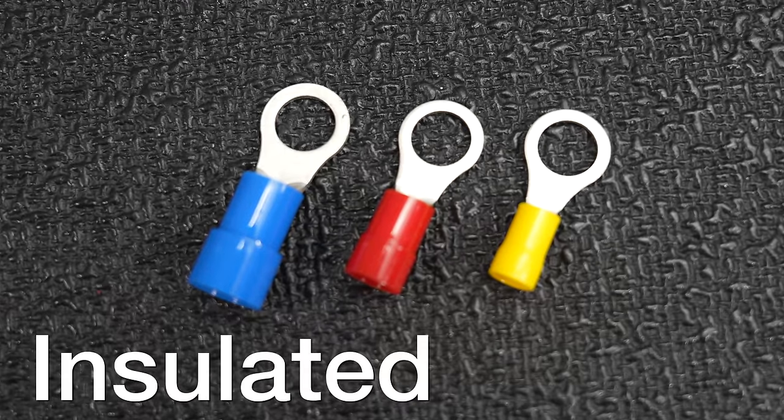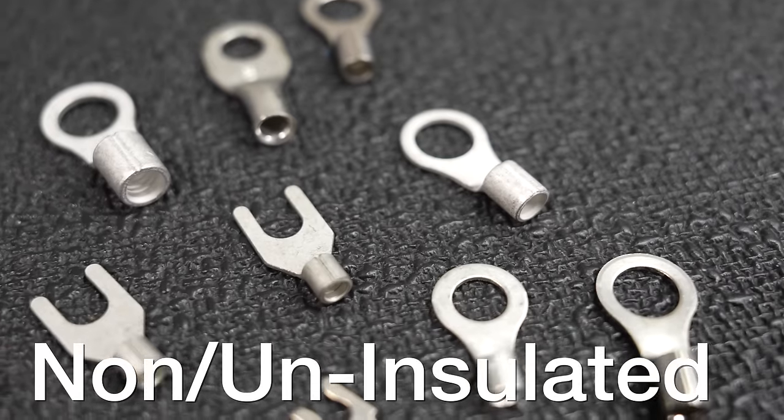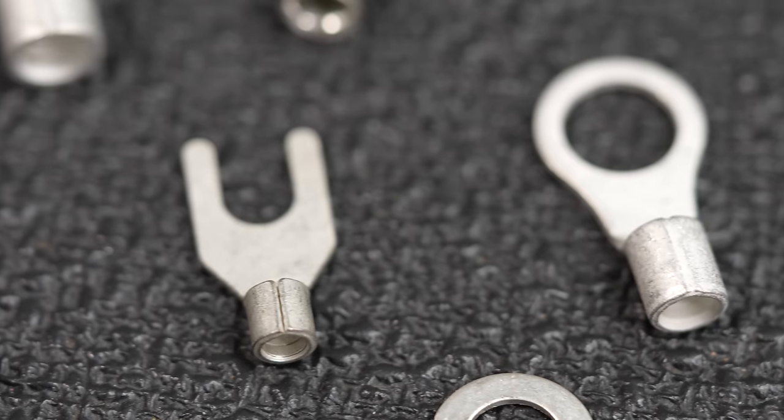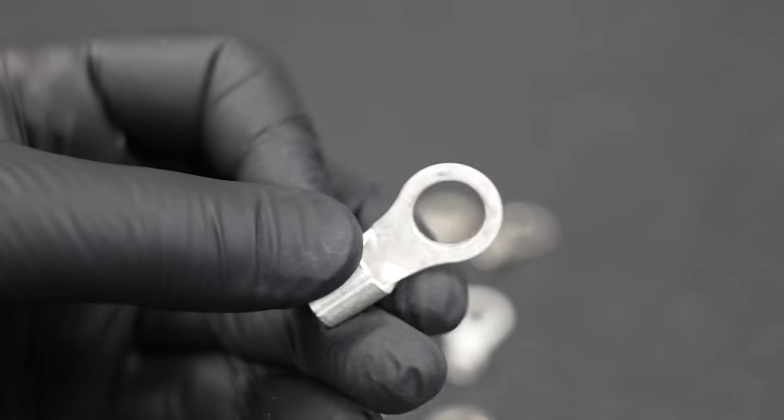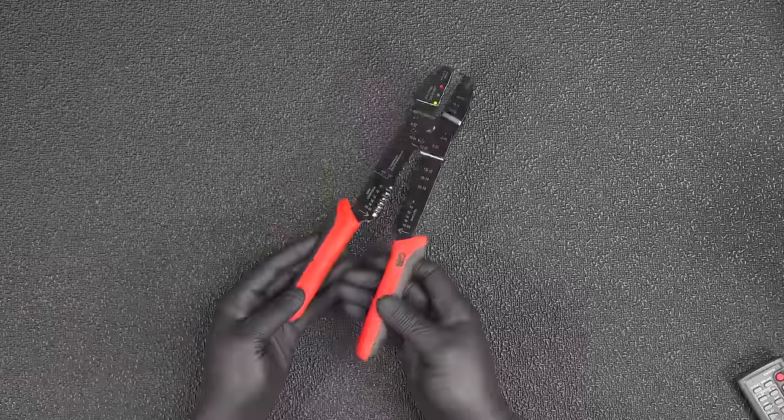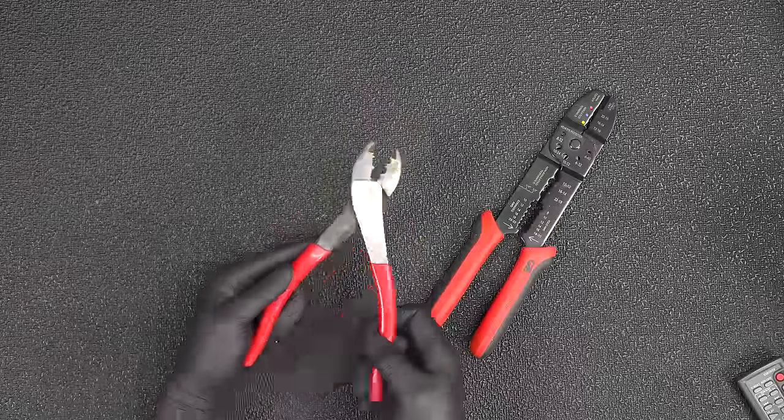This applies to both insulated as you see here along with these uninsulated connectors. Uninsulated connectors are really useful for high heat situations, things like your air conditioning system where they're exposed to extreme temperatures. There are many different tools you can use to crimp these connectors.